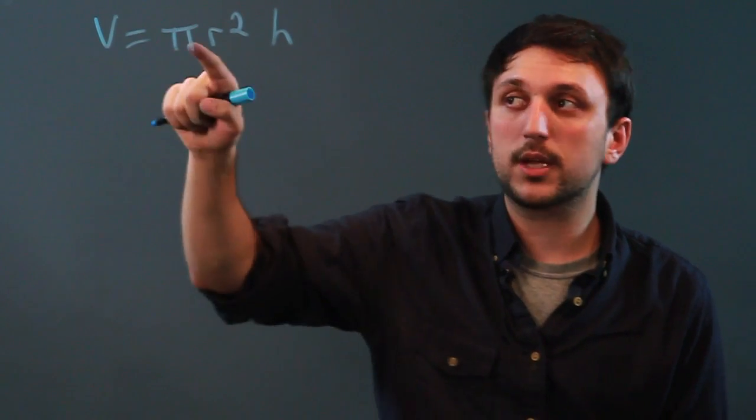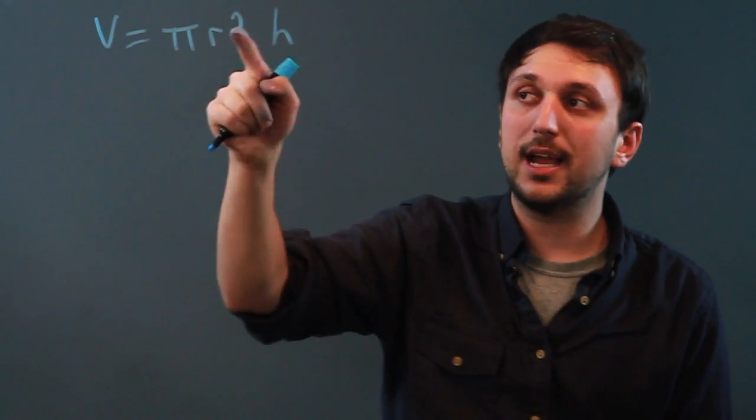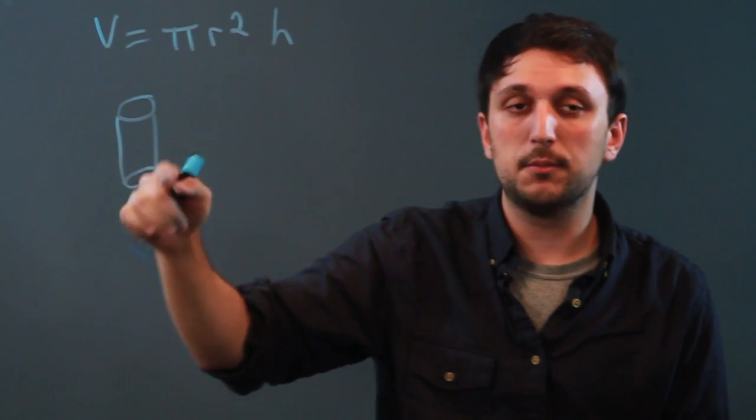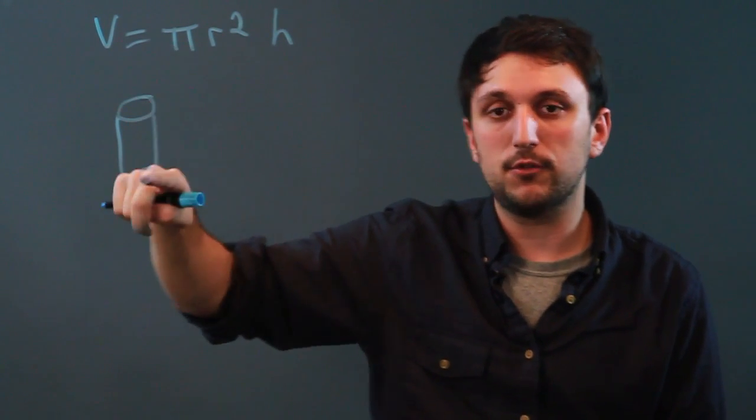Now, you may recognize pi r squared. That's the area of a circle. When you have a cylinder, you want to think of a cylinder as a bunch of circles stacked on top of each other.